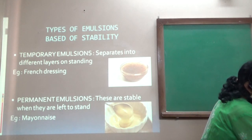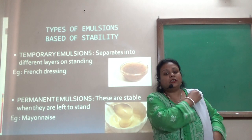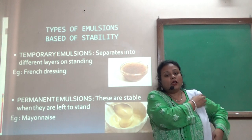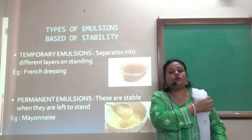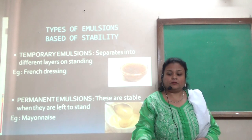The process of converting immiscible liquids to a stable emulsion is known as emulsification. A permanent emulsion is stable when left to stand. Example: mayonnaise.